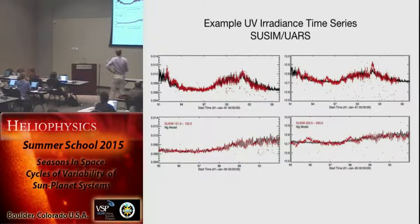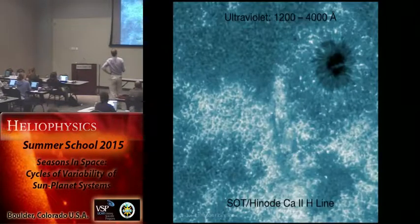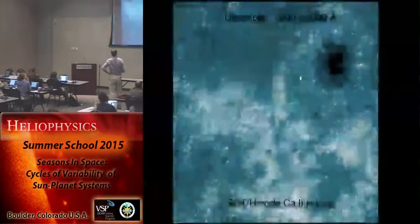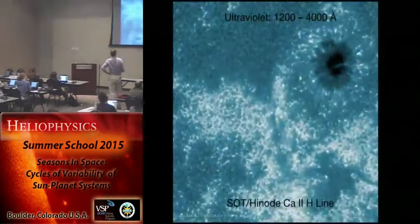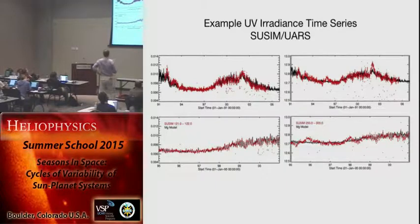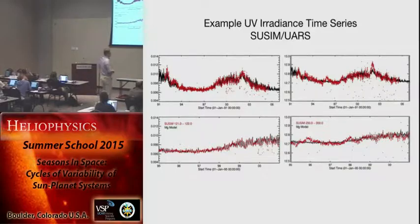If we go to longer wavelengths — say 250 to 300 nanometers — we have a much smaller contrast over a solar cycle. Here you're going basically a factor of two in Lyman alpha variability, while at 250-300 nanometers you're only going a few percent over the solar cycle.